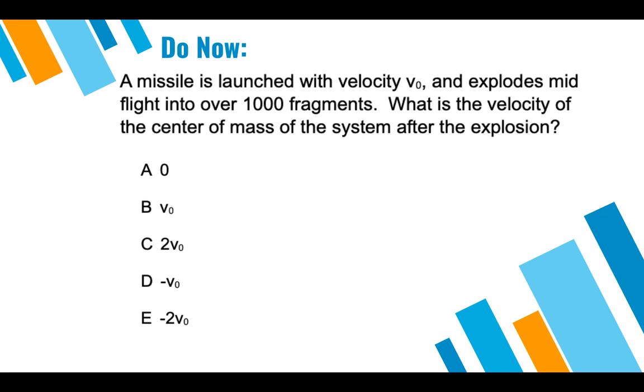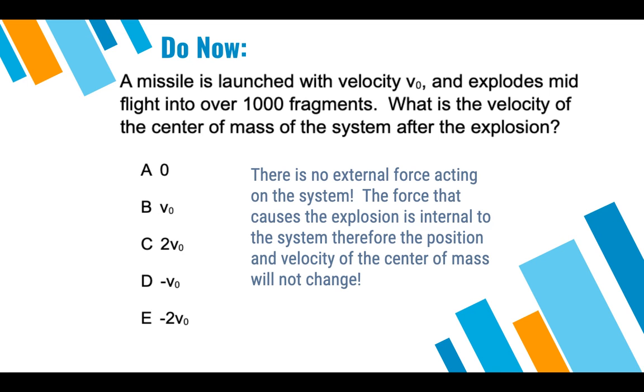So if the position of the center of mass was initially moving at an initial velocity of v initial, after the explosion, the center of mass of the system will still have an initial velocity of v initial. Each individual fragment will have their own independent velocity, but the center of mass of the system, location of where the average amount of matter is located, will still have the same initial velocity, because no external force acted on the system.